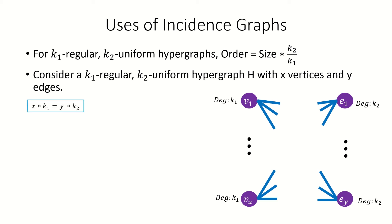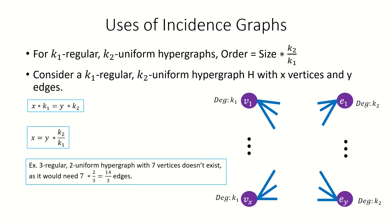The number of edges incident to one part must equal the number of edges incident to the other part, so x times k sub 1 equals y times k sub 2, which gives us our result. One example of the use of this result is that it lets us determine the existence of certain hypergraphs. For example, there can't be a 3-regular 2-uniform hypergraph with 7 vertices, because that would imply a non-integer number of edges.